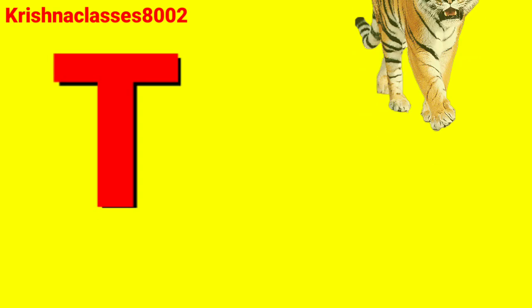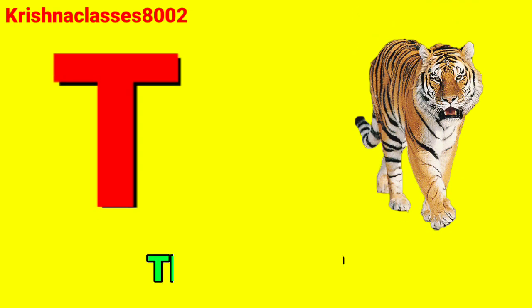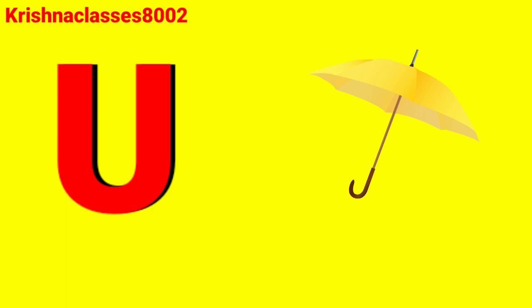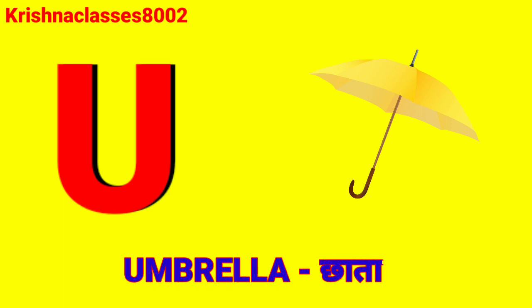T for tiger. Tiger means cheetah. U for ambrella. Ambrella means chata.